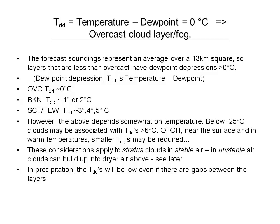The temperature-dew point depression at a given altitude gives you a measure of the clouds you might expect there. If that dew point depression — temperature minus dew point — is zero, you can expect overcast clouds; at the surface, you'd call it fog. If the dew point depression is 1 or 2°C, the expectation is broken clouds. At 3 to 5°C, scattered or few clouds. However, this is a little inexact — at very cold temperatures below minus 25°C, you can have clouds even with dew point depressions of 6 or 7°C.